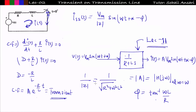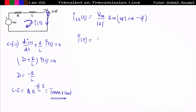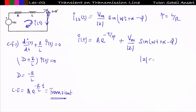Refer to lecture number 11 of network theory for the steady state response — there is no big new concept here in transmission lines; I am relating concepts you have already studied. So the complete response is: i(t) = A·e^(−t/τ) + (V_m/|Z|)·sin(ωt + α − φ), where τ = L/R is the time constant, |Z| = √(R² + ω²L²), and φ = tan⁻¹(ωL/R).